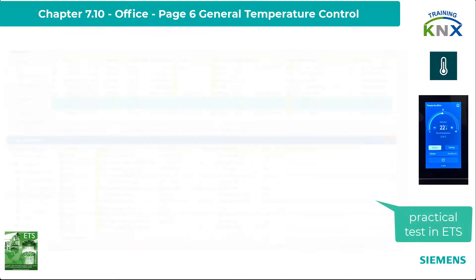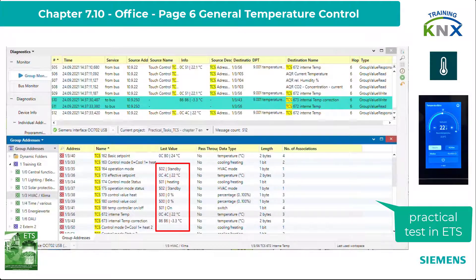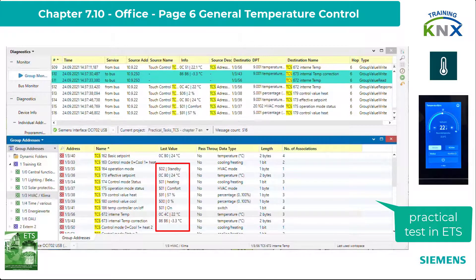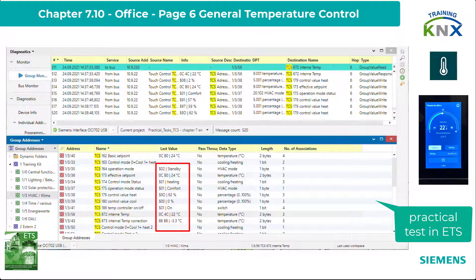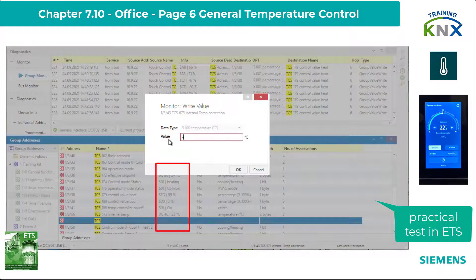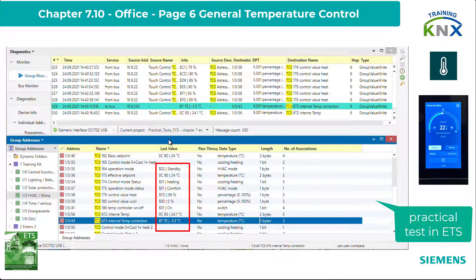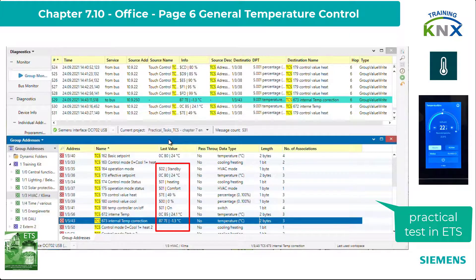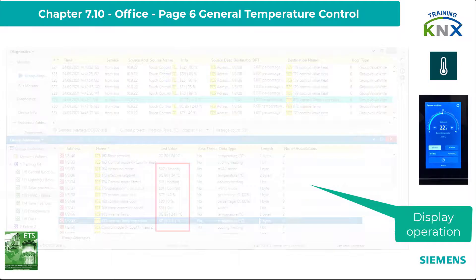Now to the test. First in the group monitor of ETS: the condition for test start is that the controller is in heating mode standby. The effective setpoint corresponds to the actual temperature value and the control variable is still zero. Now I change the operating mode to comfort — you can see that the effective setpoint value changes by plus 2 Kelvin, and at the same time the control value jumps to 57%. Now comes a time-lapse recording: after approximately six minutes, the control value is at 99%. Now I adjust the actual value via the corresponding correction object so the actual temperature is now equal to the setpoint again.